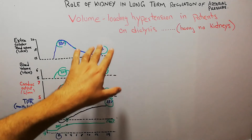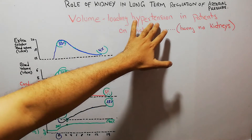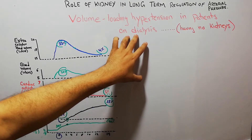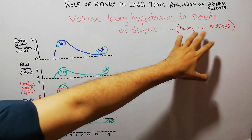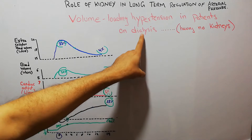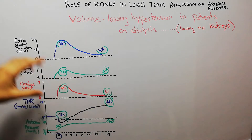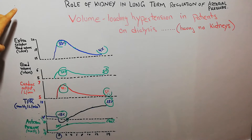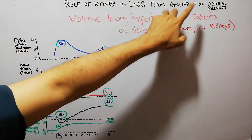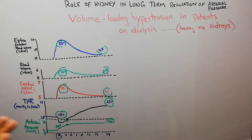Today in this lecture we are going to discuss volume loading hypertension in patients on dialysis, or patients having no kidneys who are dependent on artificial kidneys or dialysis. We have previously discussed the role of the kidney in long-term regulation of arterial pressure and covered different related topics.